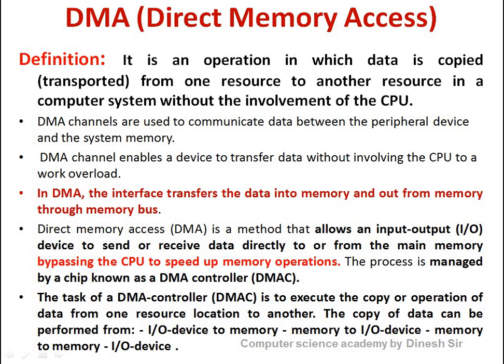CPU क्या करता है — when data needs to be transferred, the CPU handles all the initiation once. Whenever input/output data arrives from a peripheral device, the CPU receives a request. It starts the process once, then detaches itself — meaning it goes on to execute other tasks — and hands over this particular task to a third authority like DMA to supervise.